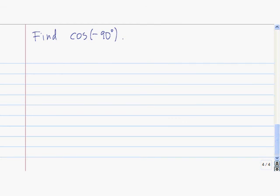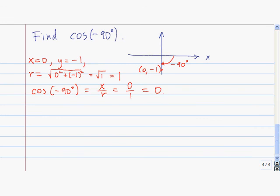Here's a problem for you to try: find the cosine of negative 90 degrees. Remember, negative 90 degrees is the angle you get by rotating in the clockwise direction. The cosine of negative 90 degrees is equal to 0. We choose any point on the negative y-axis, because that's the terminal side of negative 90 degrees. Along there, the x-coordinate is 0, and the y-coordinate is any negative number. So x divided by r equals 0 divided by r, which is 0.